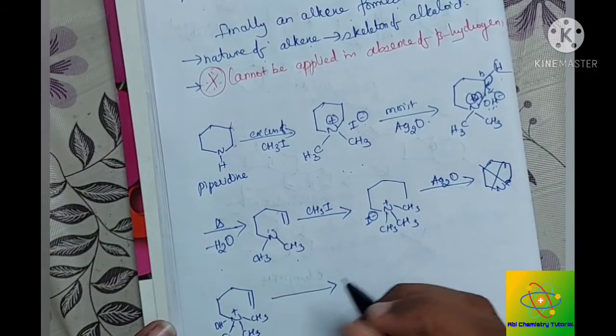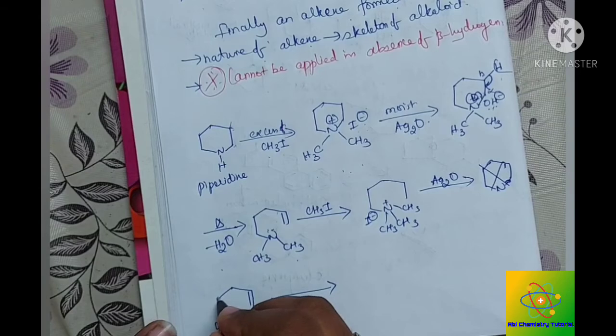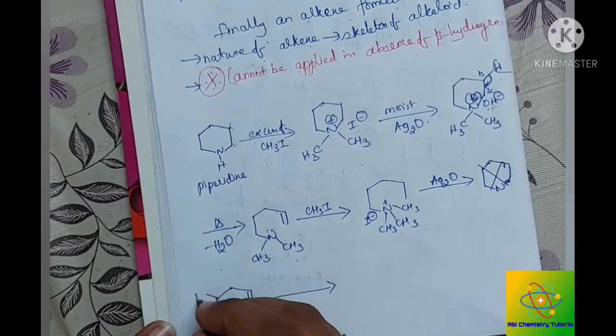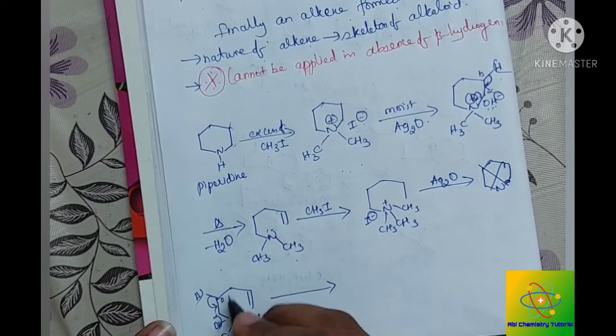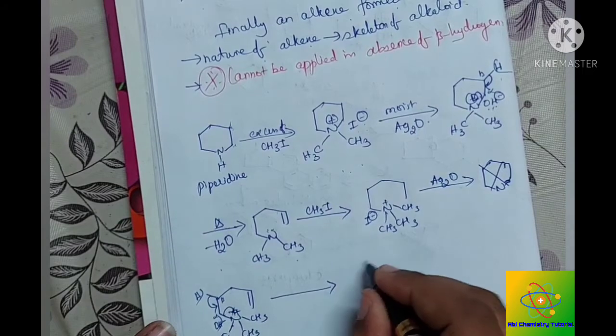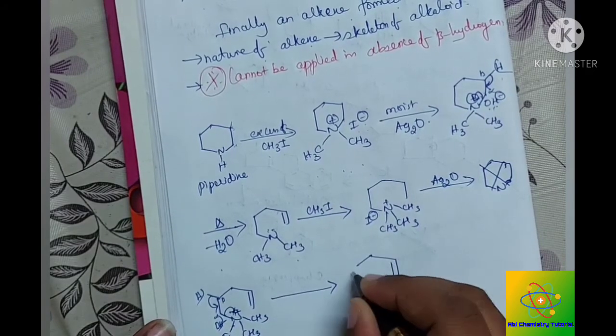The next step will be the removal of beta hydrogen, this is alpha and beta. This OH and hydrogen will go and the bond shifts here and the electron shifts to this nitrogen atom, so we get an alkene.